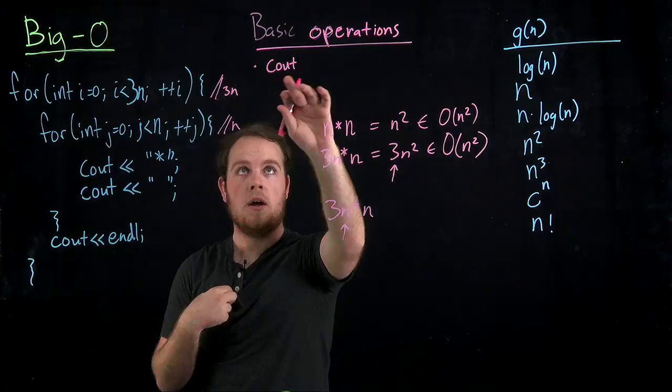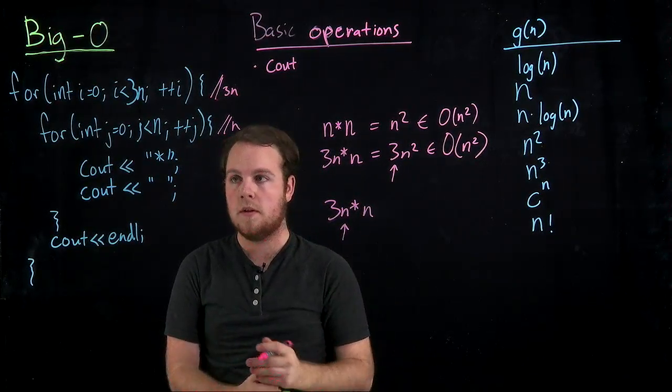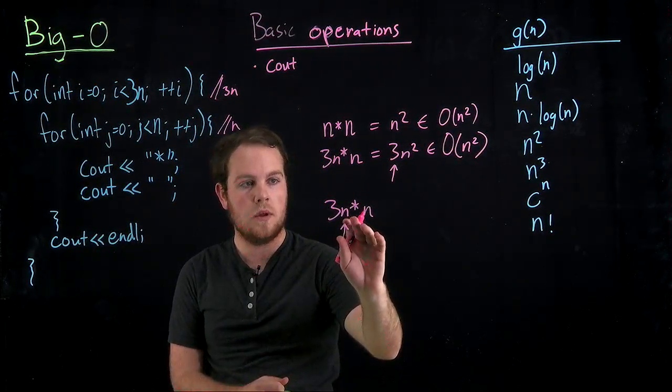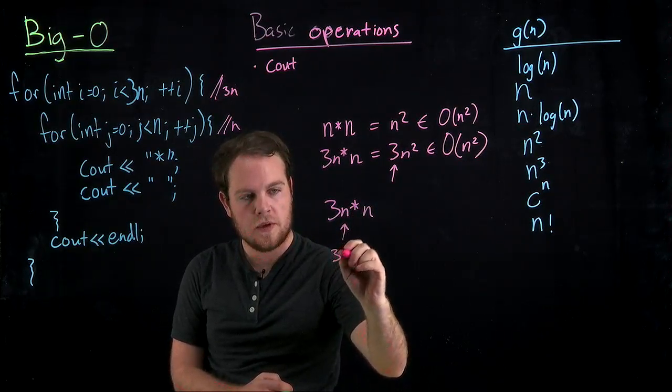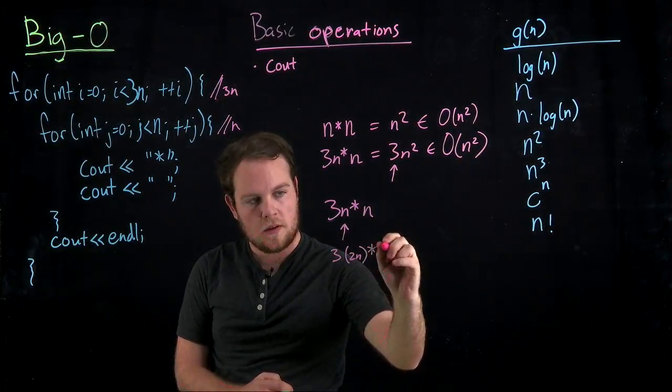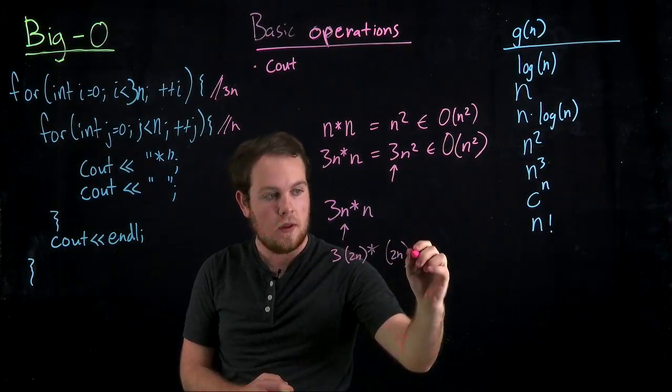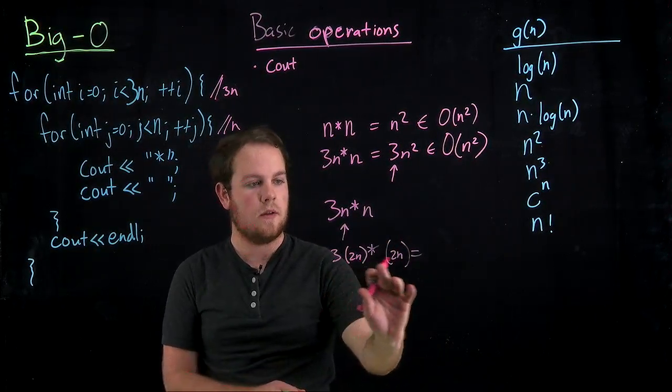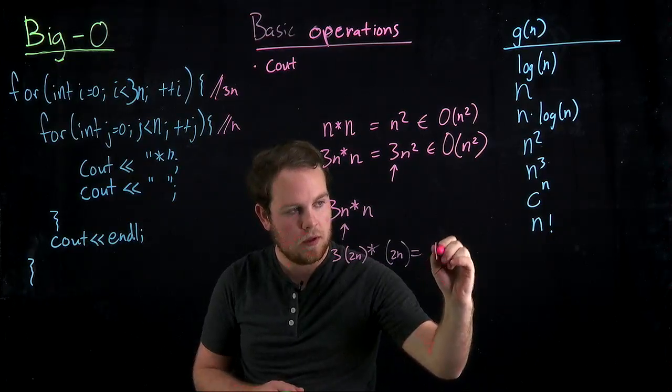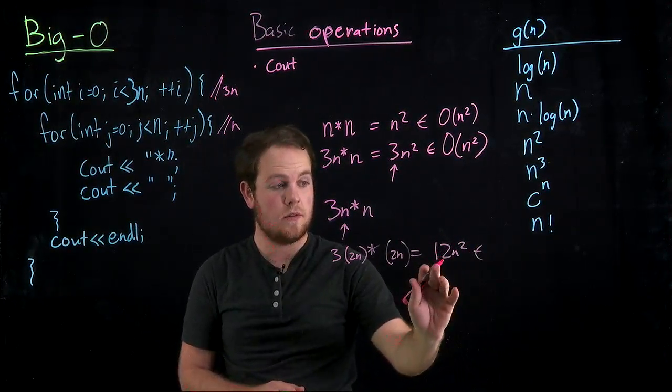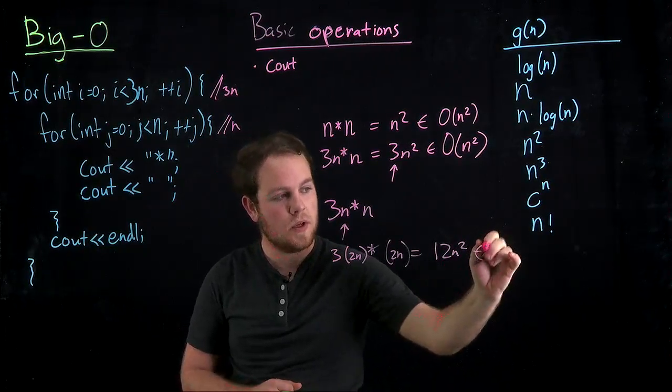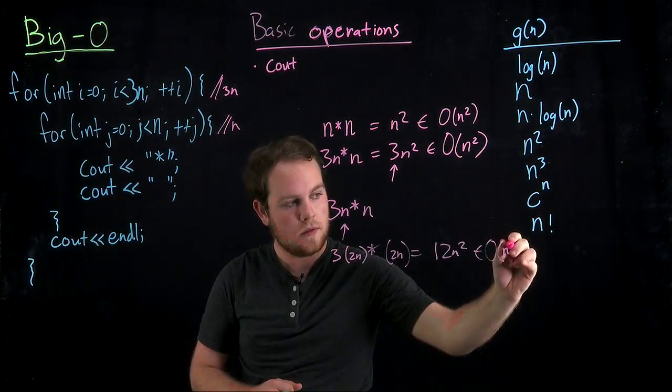And that used to be 1, which was constant. But now it's 2. So what you do is you substitute 2n for n. So it's 3 times 2n times 2n, which gives us 4 times 3, which is 12n squared, which is still, because this is a constant multiplier, O of n squared.